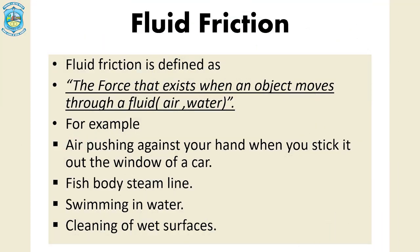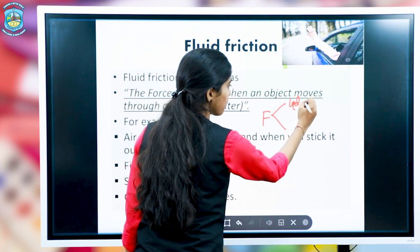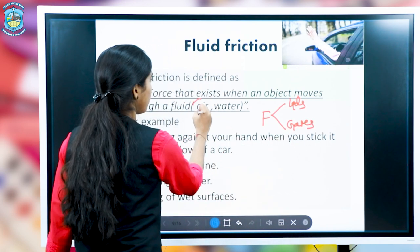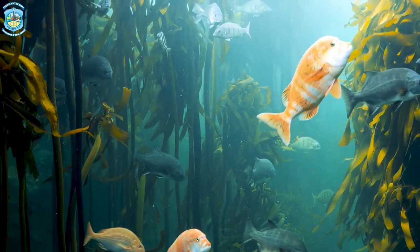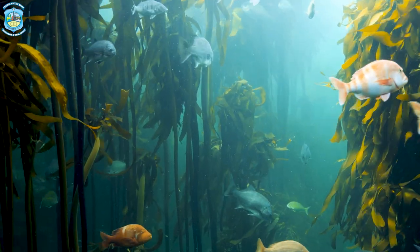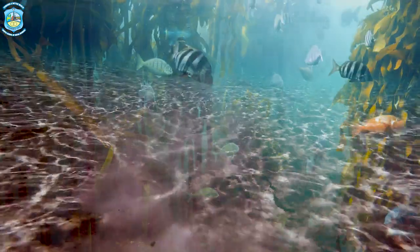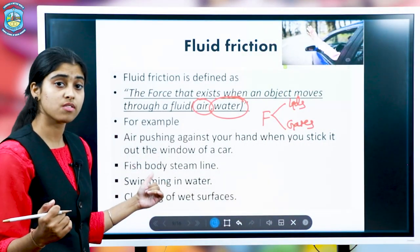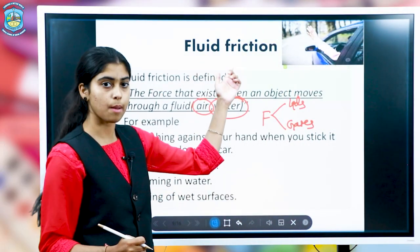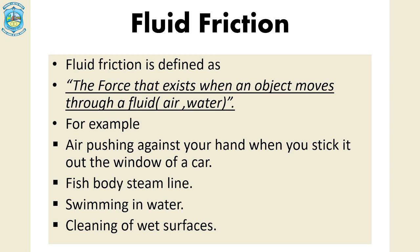Fluid friction occurs in fluids — liquids and gases such as air and water. Have you observed why the body of a fish is streamlined? Because that shape reduces friction, allowing the fish to swim easily in water. When we swim in water, we feel a force opposing us, restricting our motion — that is fluid friction. Cleaning wet surfaces is another example of fluid friction.